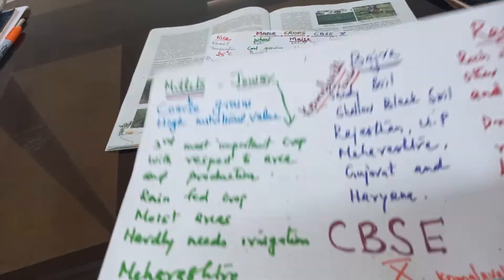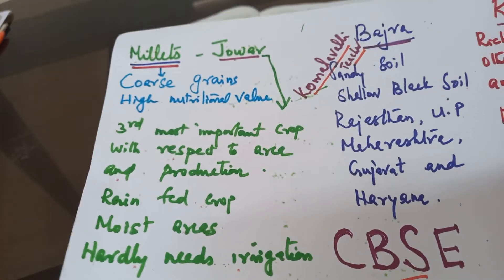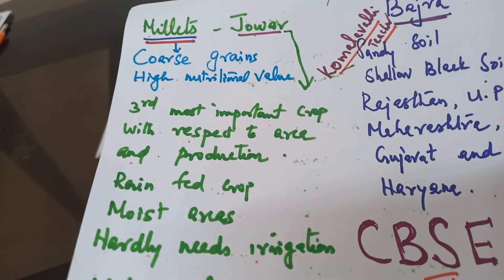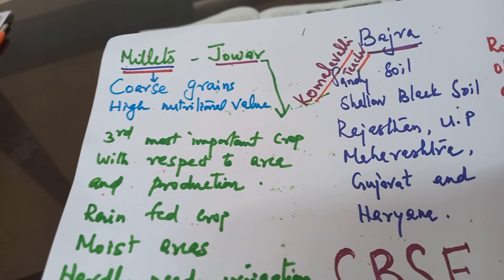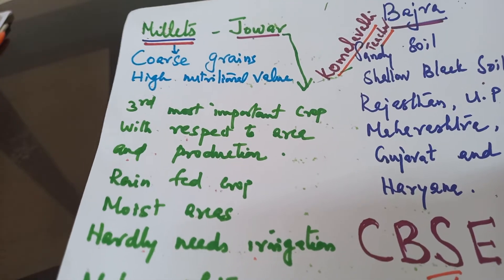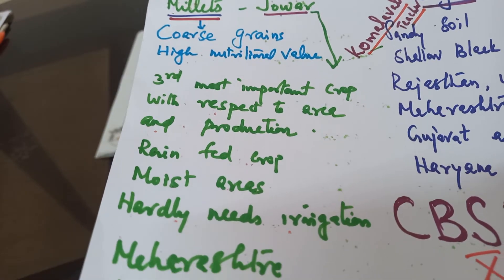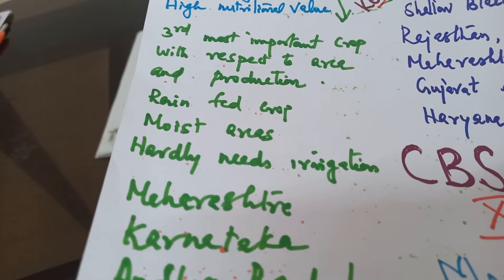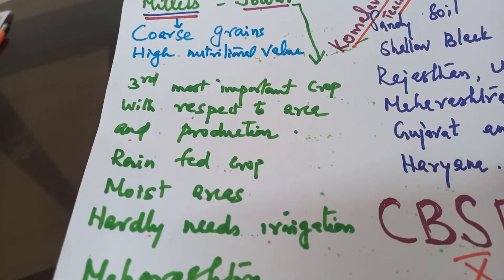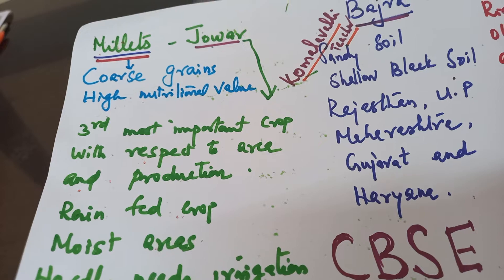I also thought to share information about millets. Millets are coarse grains with high nutritional value. Regarding Jowar, Bajra, and Ragi — Jowar is the third most important crop with respect to area and production in India. It is a rain-fed crop grown in moist areas and hardly needs irrigation. Major growing areas for Jowar are Maharashtra, Karnataka, Andhra Pradesh, and Madhya Pradesh.